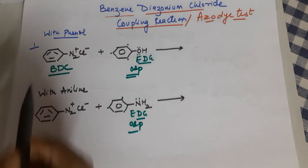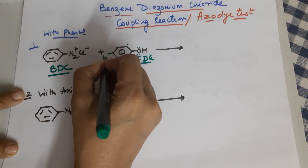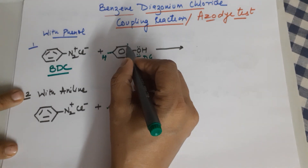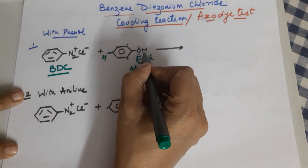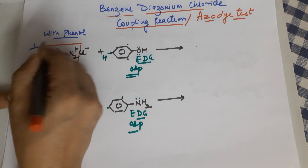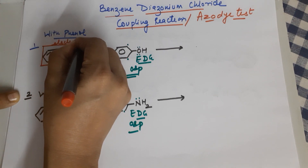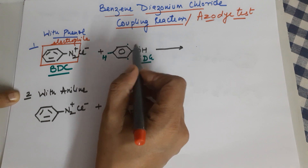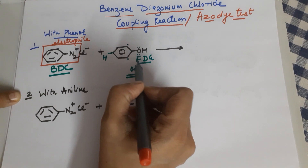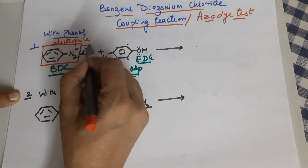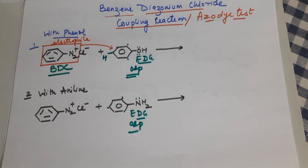Coming to the reaction: the benzene diazonium chloride reacts with the phenol at the para position. As you very well know, the para position is sterically less hindered. So the reaction takes place at the para position in comparison to the ortho position, where there is a hindrance due to the presence of the OH group. Now here this is the electron-loving entity — that is, this is your electrophile — and this electrophile approaches the benzene ring wherever the electron density is high. The electron density is high at ortho and para positions due to the electron donating or activating effect of the OH.